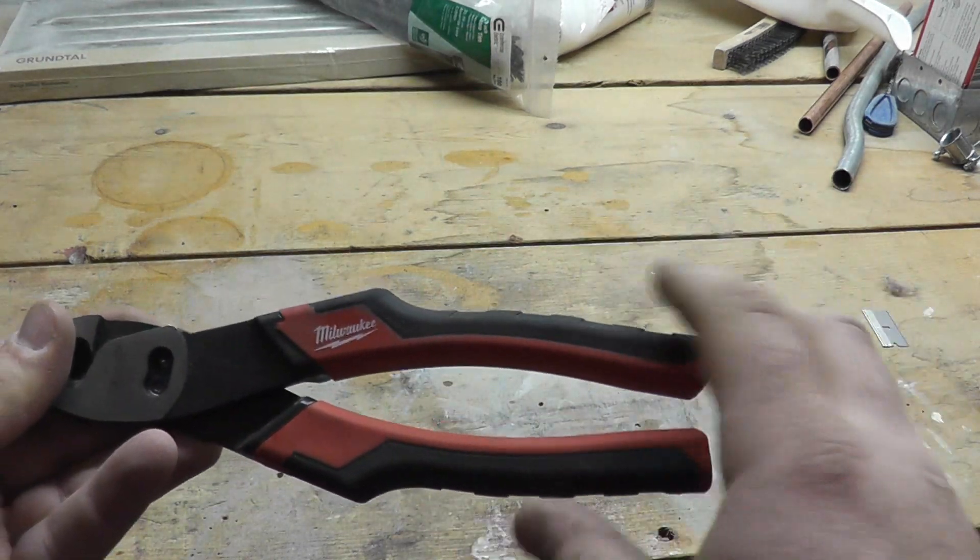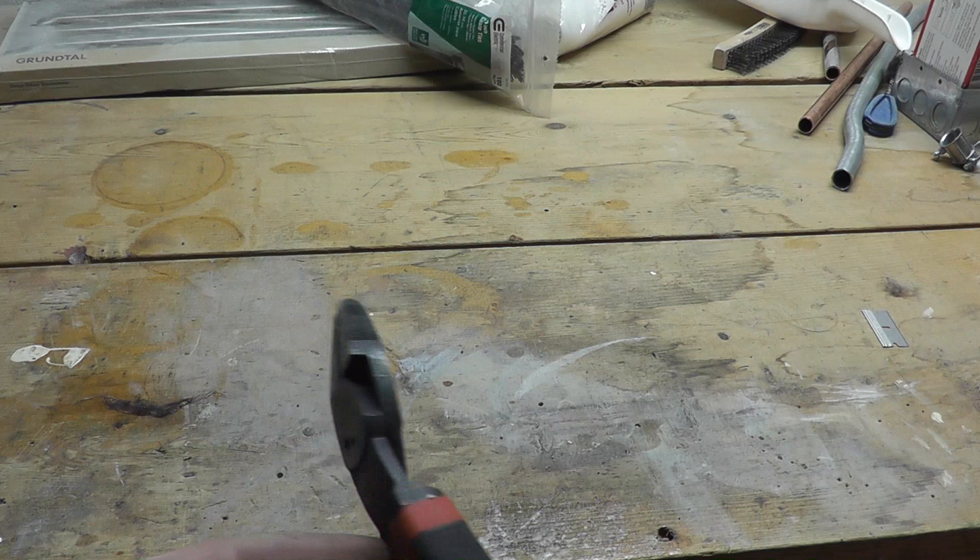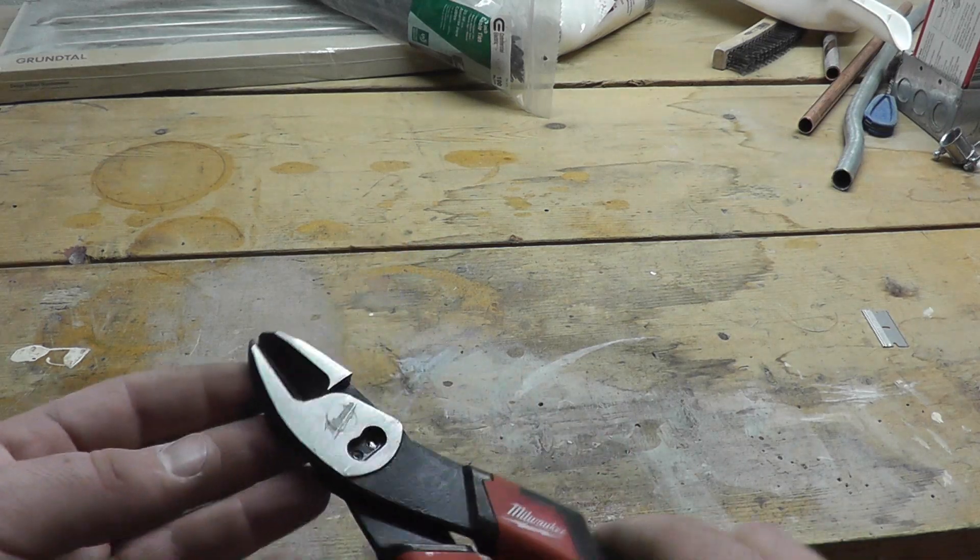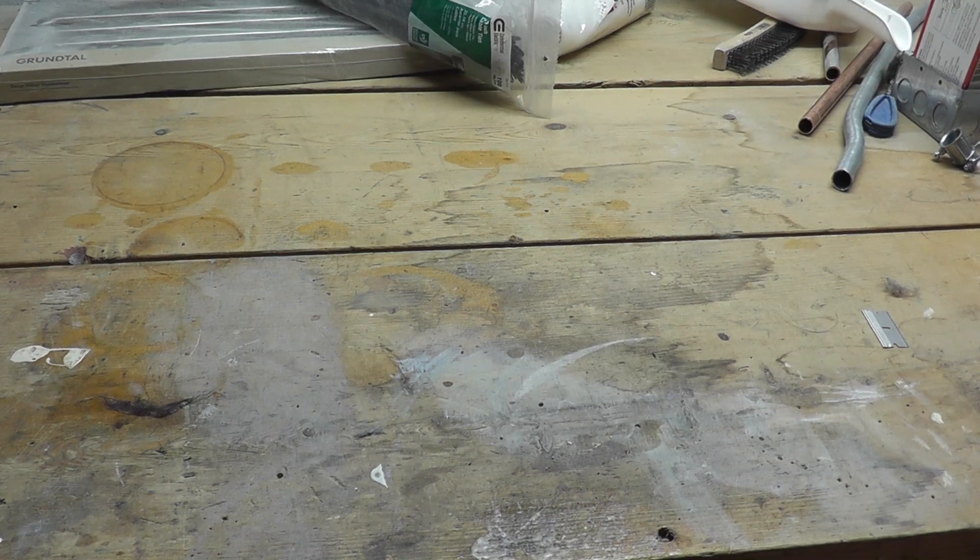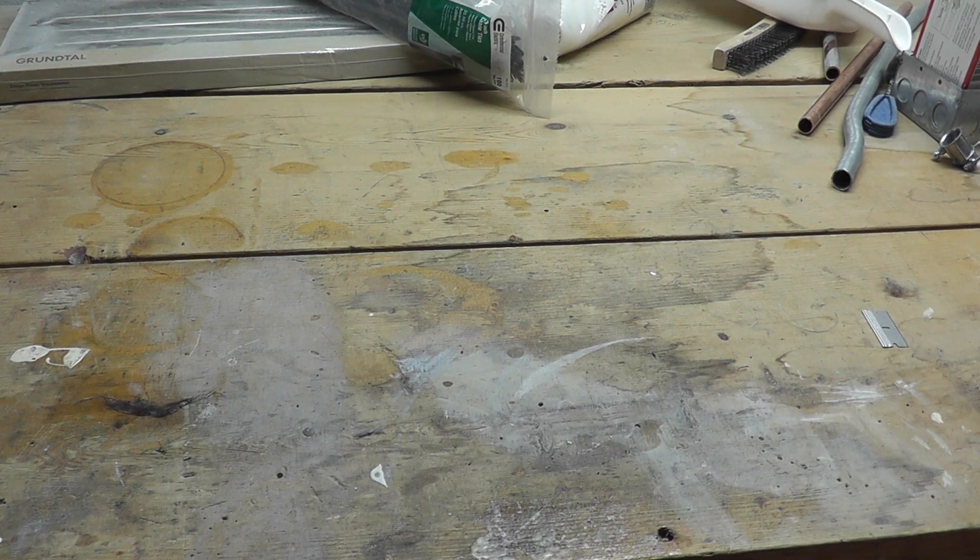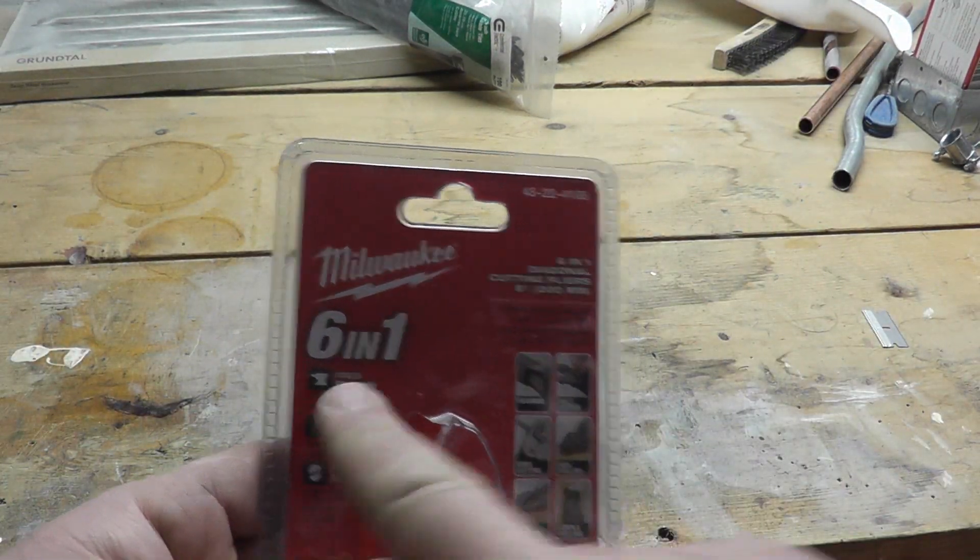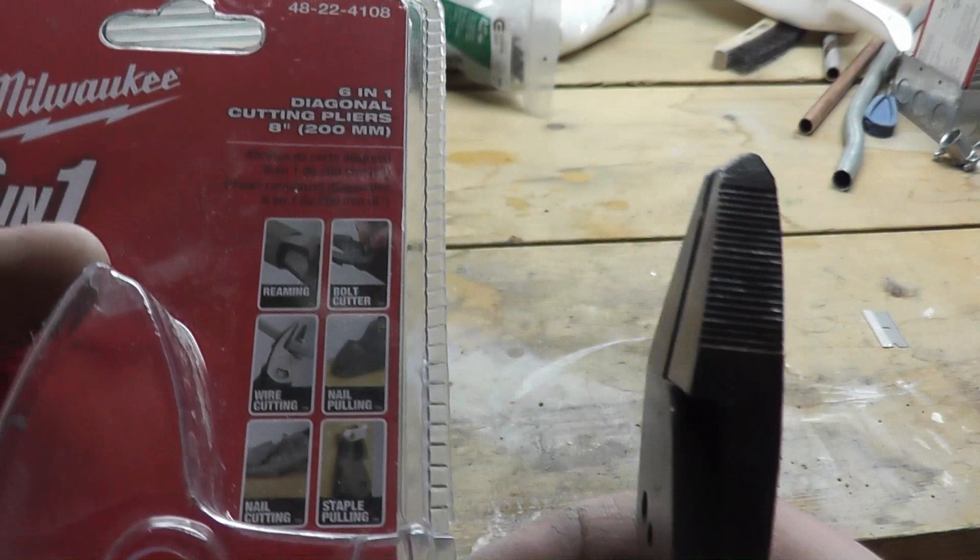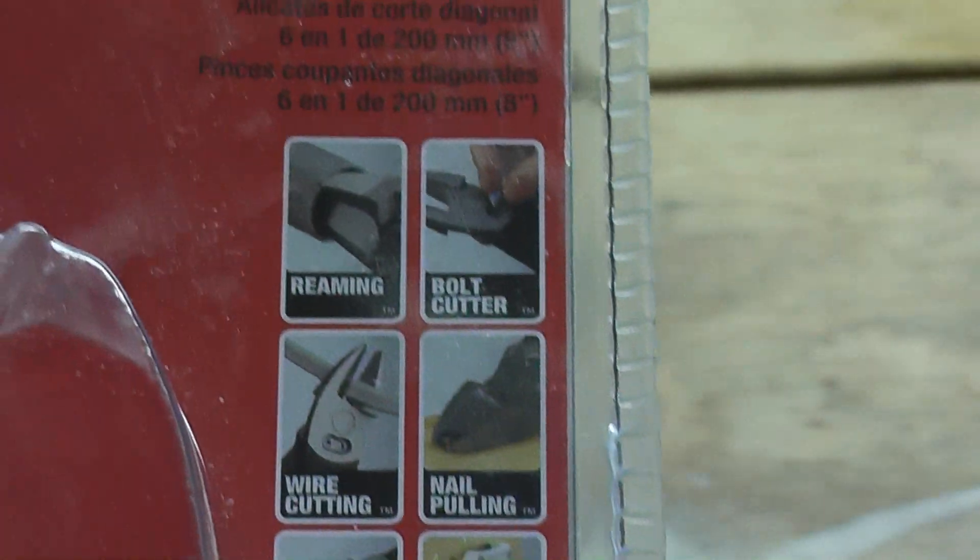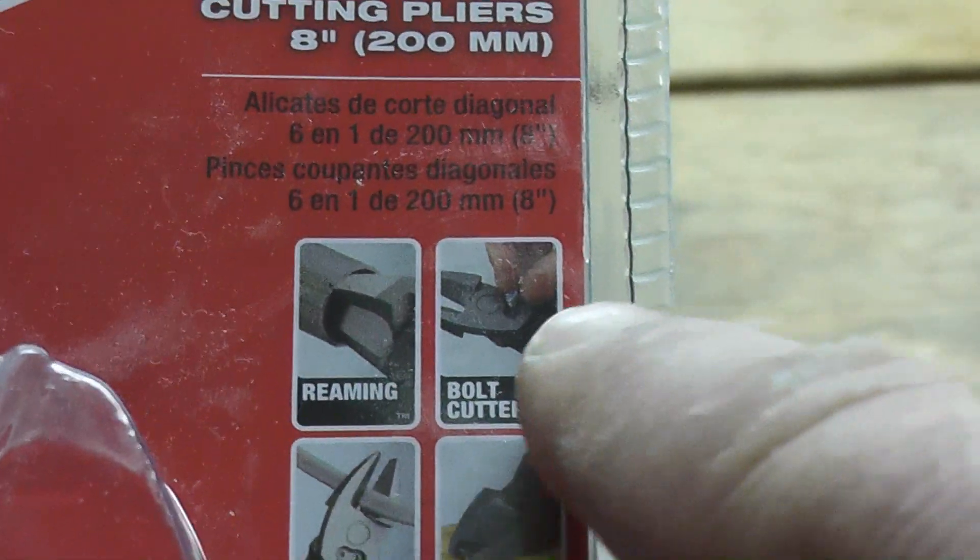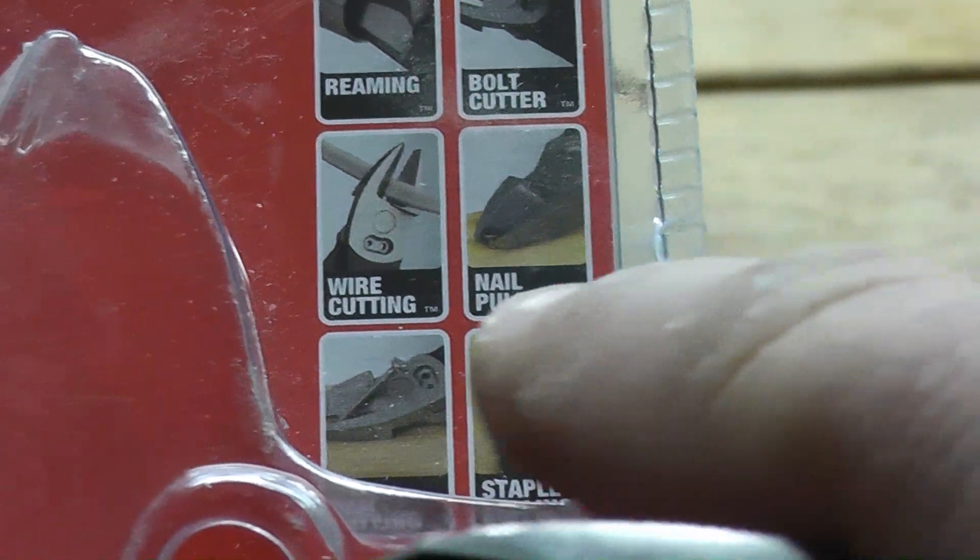So I picked up these - you can see Milwaukee. They're heavy. Now this isn't technically insulated, it's just rubberized. It doesn't offer any electrical protection. But what caught me by surprise is - I don't know if it's just advertising or what - but they bill it as a six-in-one tool, as you can see here. You can use it for reaming a piece of EMT, use it for cutting your bolts, cutting your wires, pulling a nail.